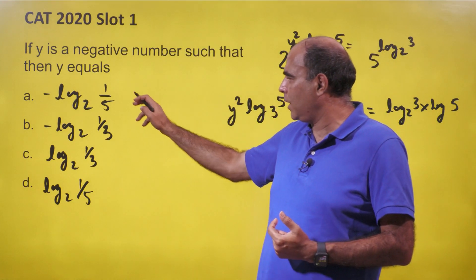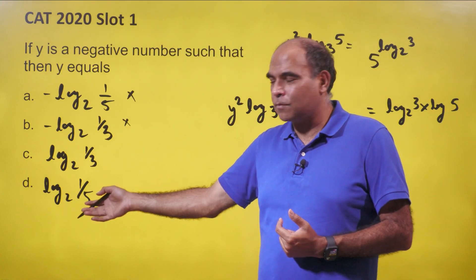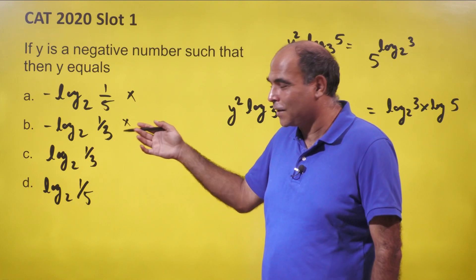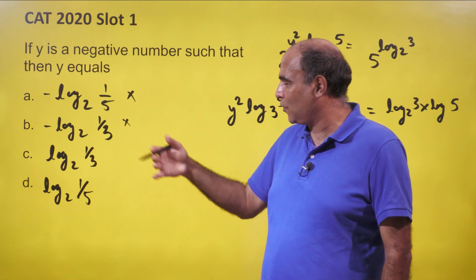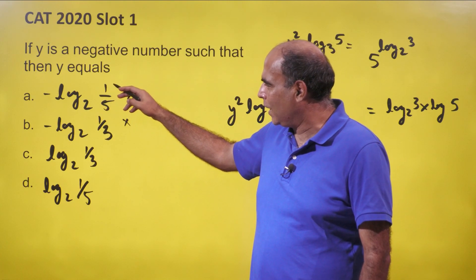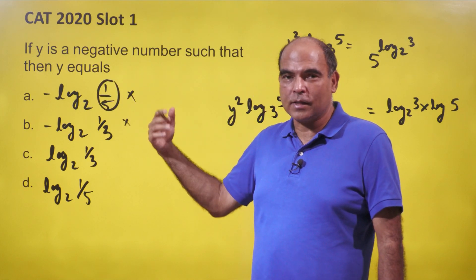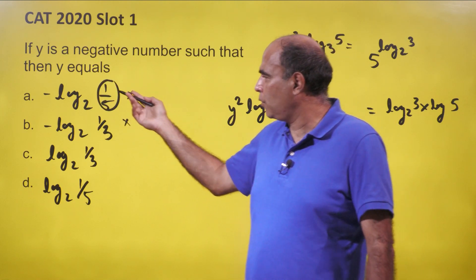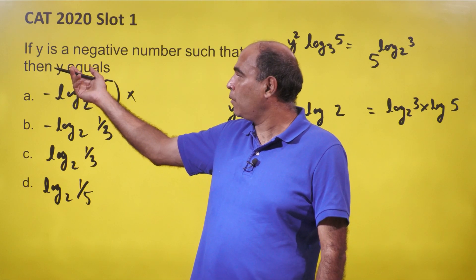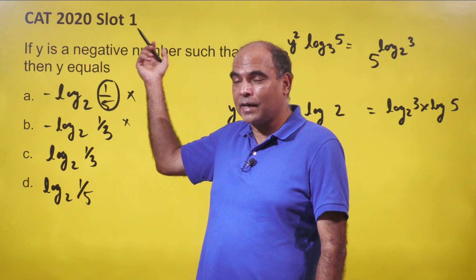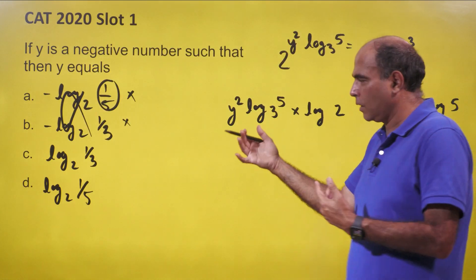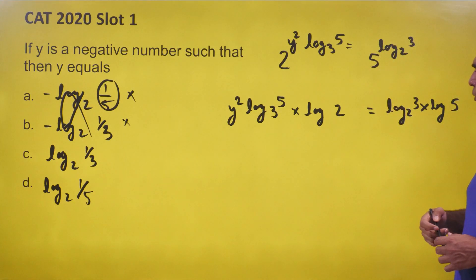So first of all, you can straight away eliminate two of the options. If you're feeling lucky, just mark one of them — you'll get a 50% chance. But anyway, we're going to see how to do this. Log of any number less than one is always negative, so if we have a negative of a negative number, it becomes positive — it cannot be the value of y given y is negative. So those two options are eliminated directly.